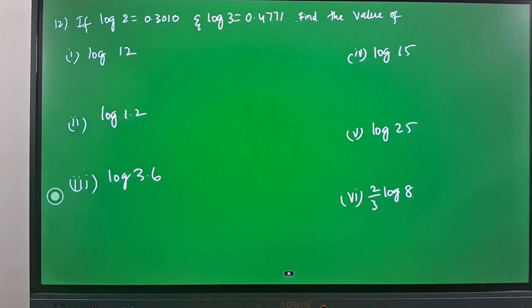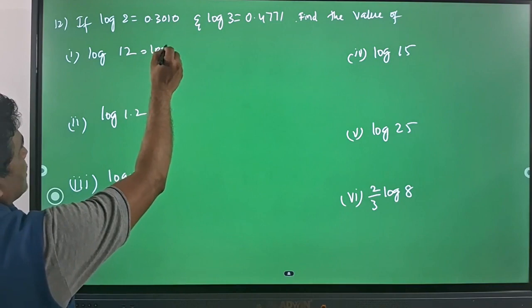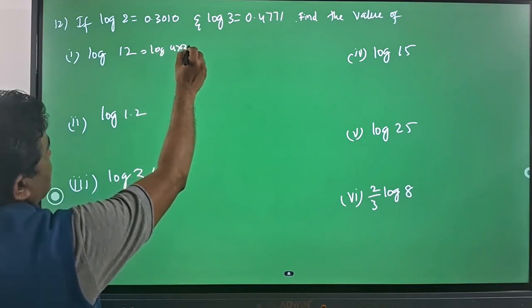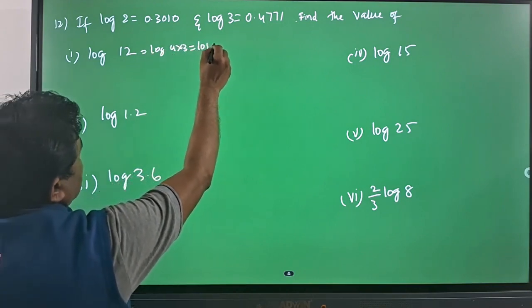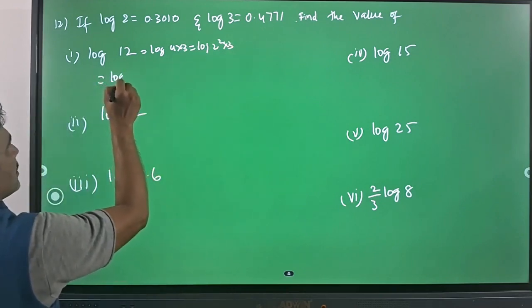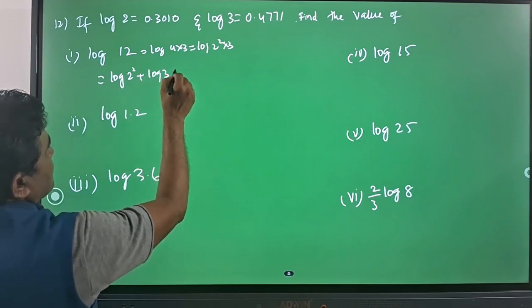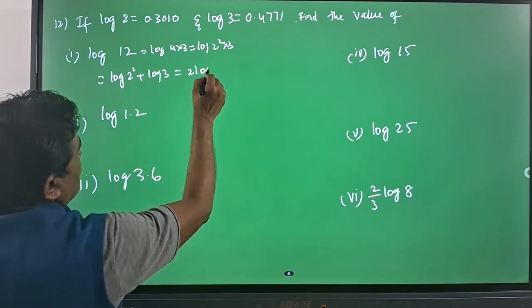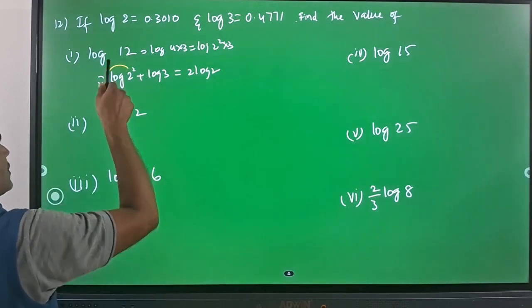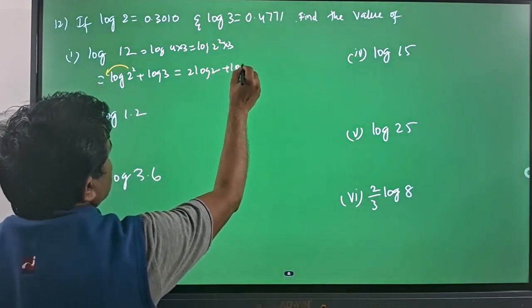So we need to evaluate. Here log 12 can be written as log 4 into 3, further log 2 square into 3, and further we can write log 2 square plus log 3, which is equal to 2 log 2 (the power will come as a coefficient) plus log 3.